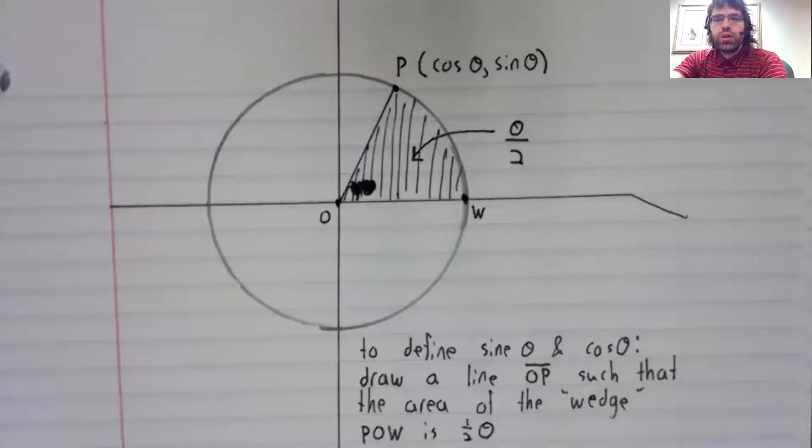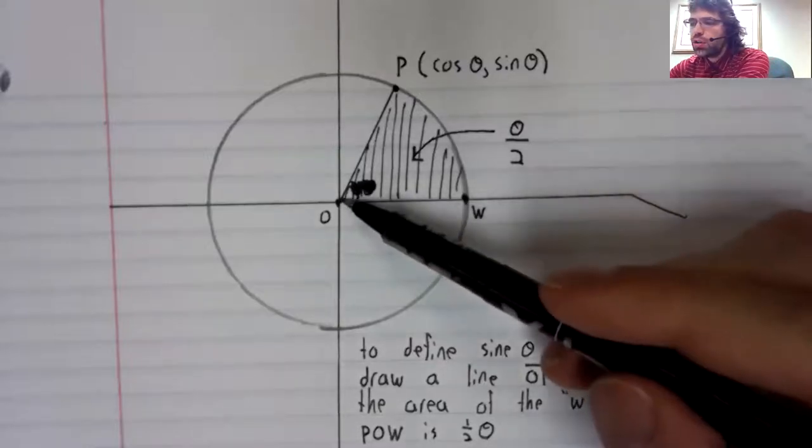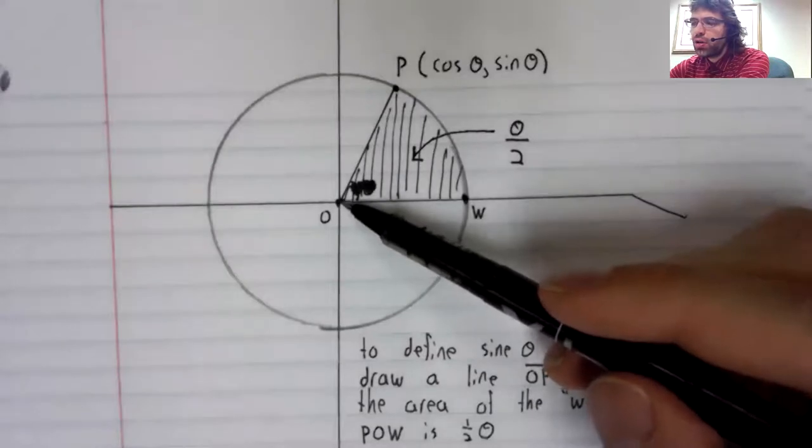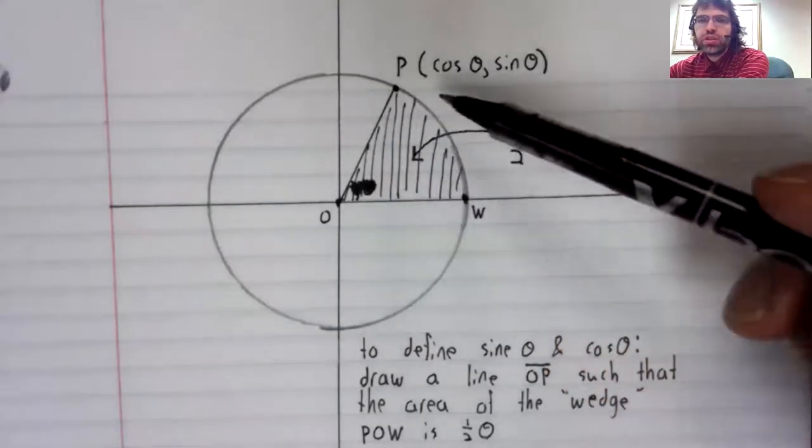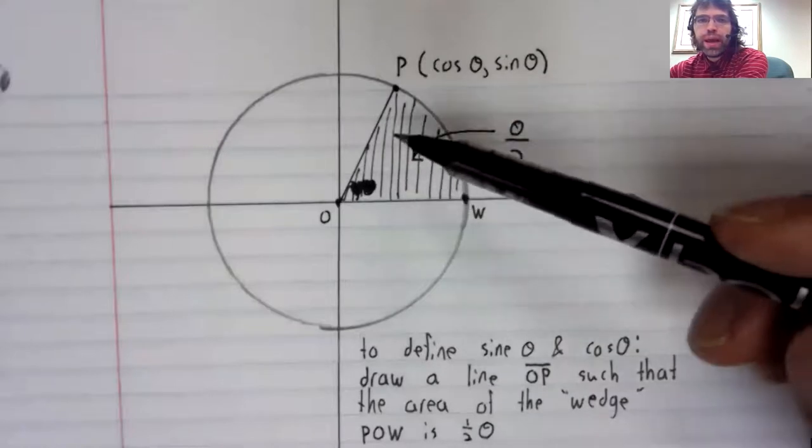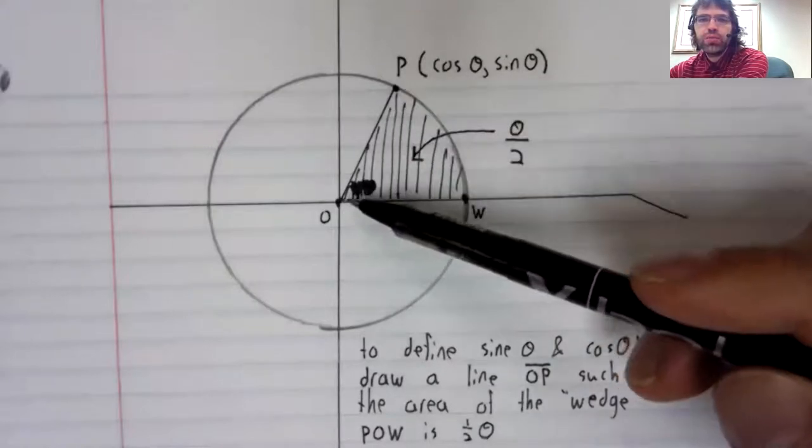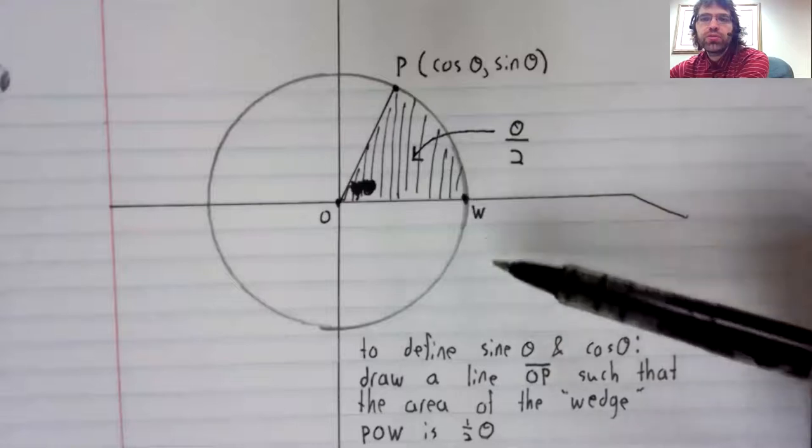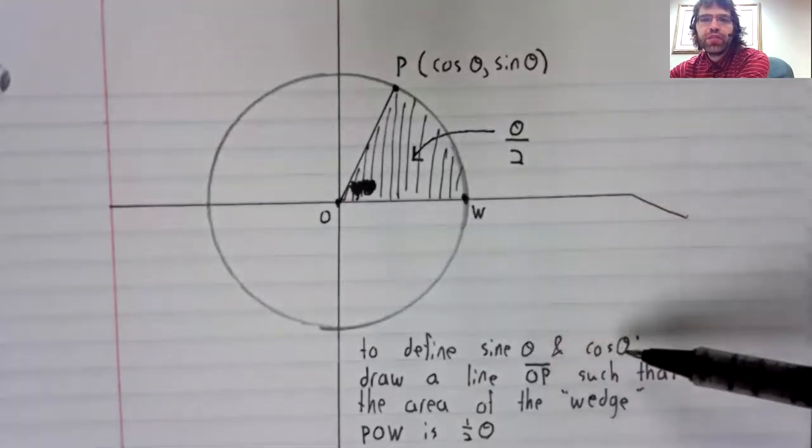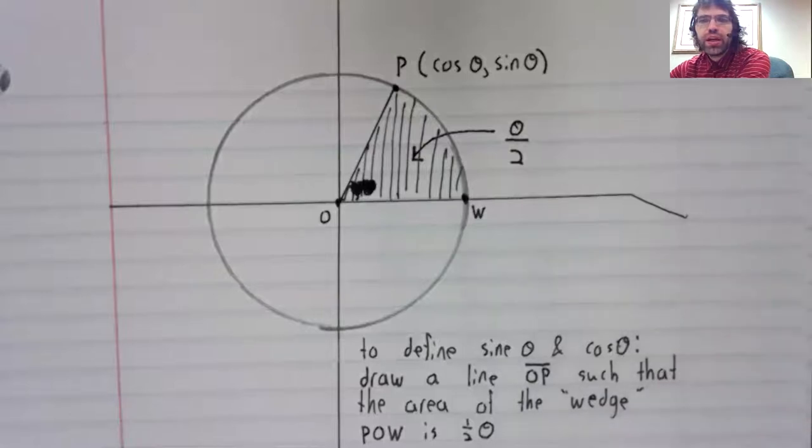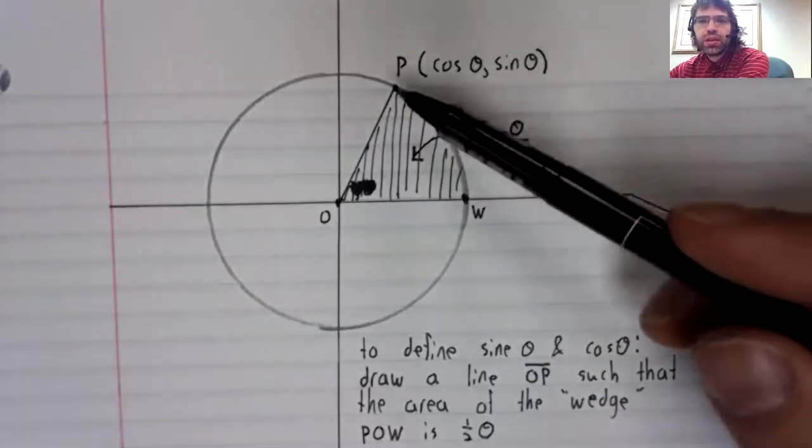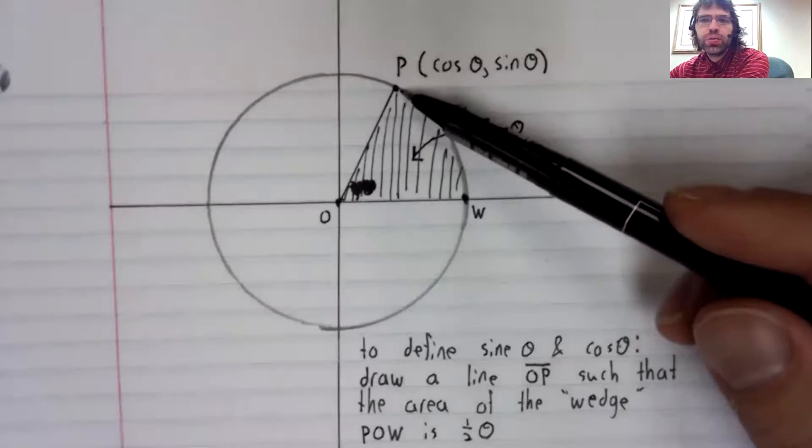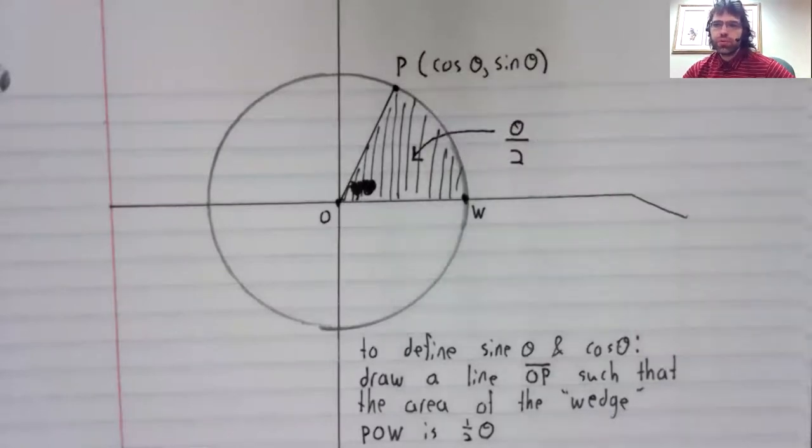Instead of talking about angles, we could draw a line O P such that the area of the wedge P O W is one half of the angle we're looking at. And then we look at the x and the y coordinate of this point as usual.